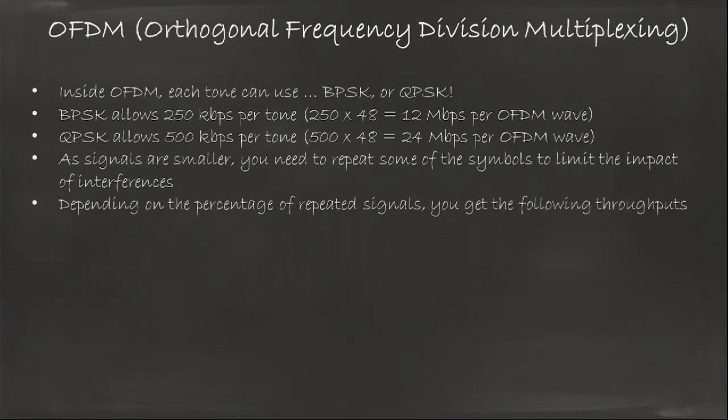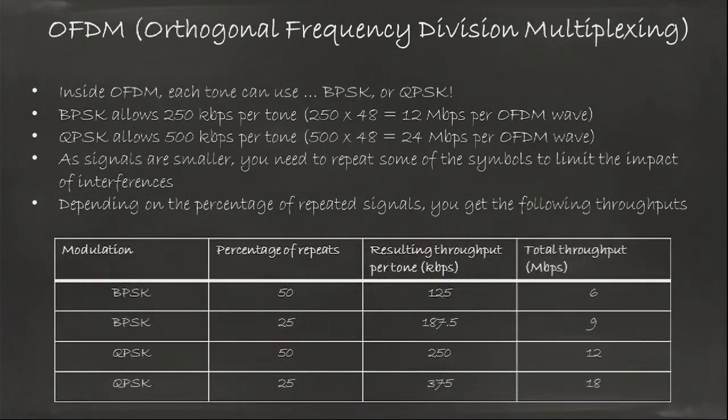The result is that the throughput you get depends on the number of times you repeat the signal. Typically you'll repeat one-third, one-fourth of the signal, 25%, 30%, etc. So the way you read OFDM is typically to read the modulation, BPSK, QPSK, and then decide the percentage of repeat, and then that gives you a throughput per tone times 48, that gives you the entire speed of your communication. And you see we have 6, 9, 12, and up to 18 megabits per second with QPSK and 25% repeat. That's pretty good.